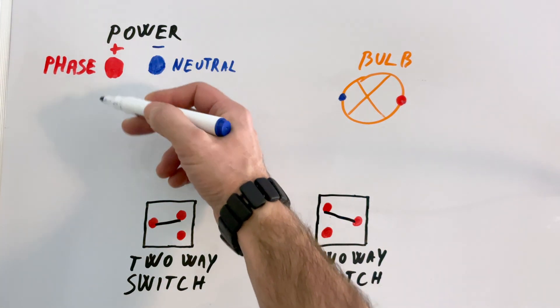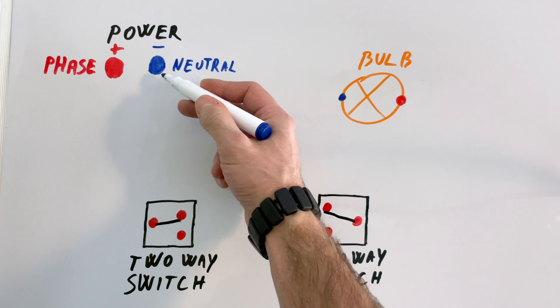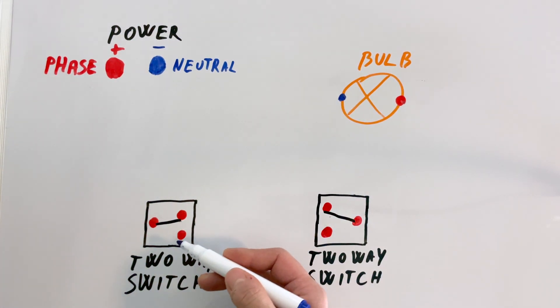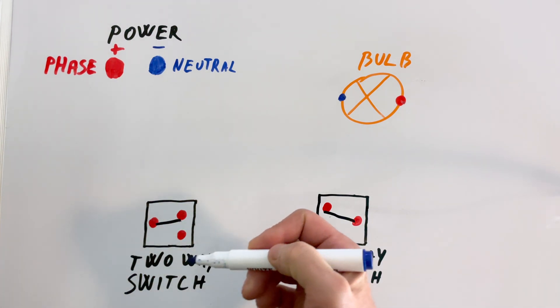Here, we have the power source with phase and neutral wires. We also have a bulb and two two-way switches. Each switch has three contacts. Now let's see how to connect them to make the bulb work.